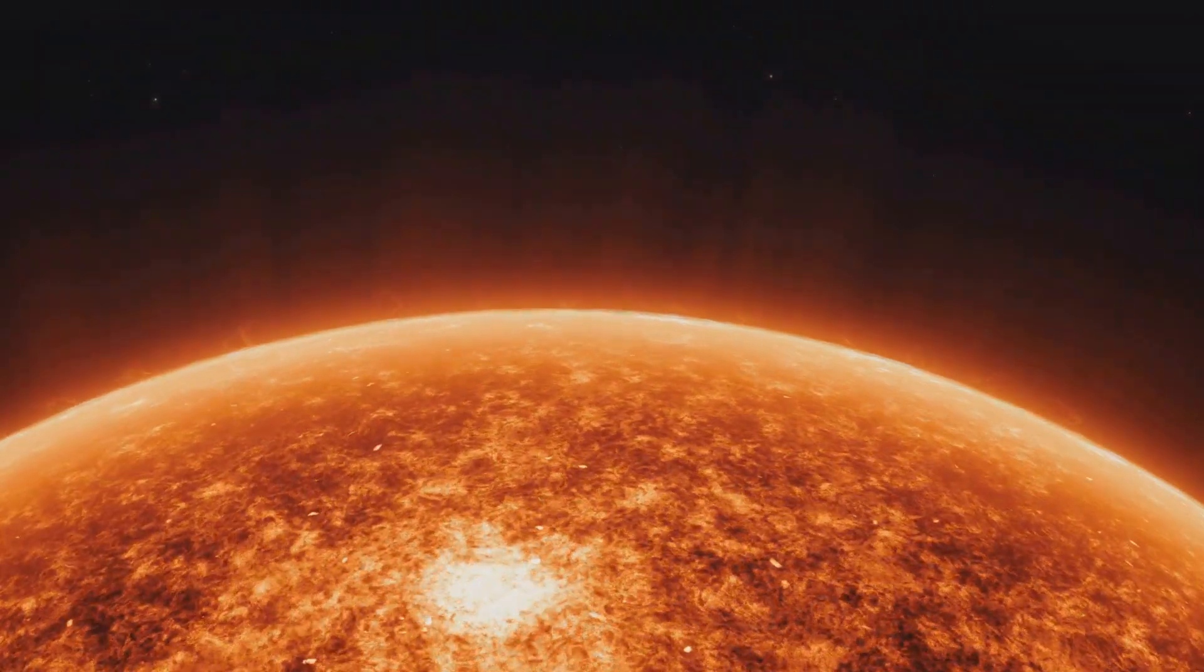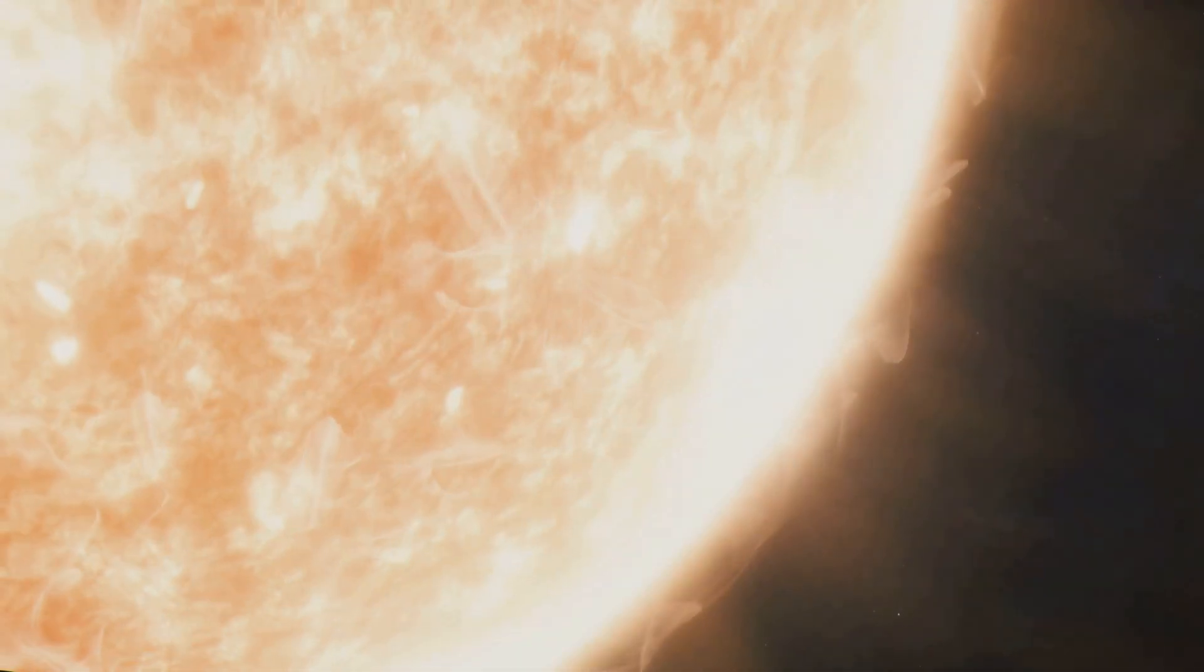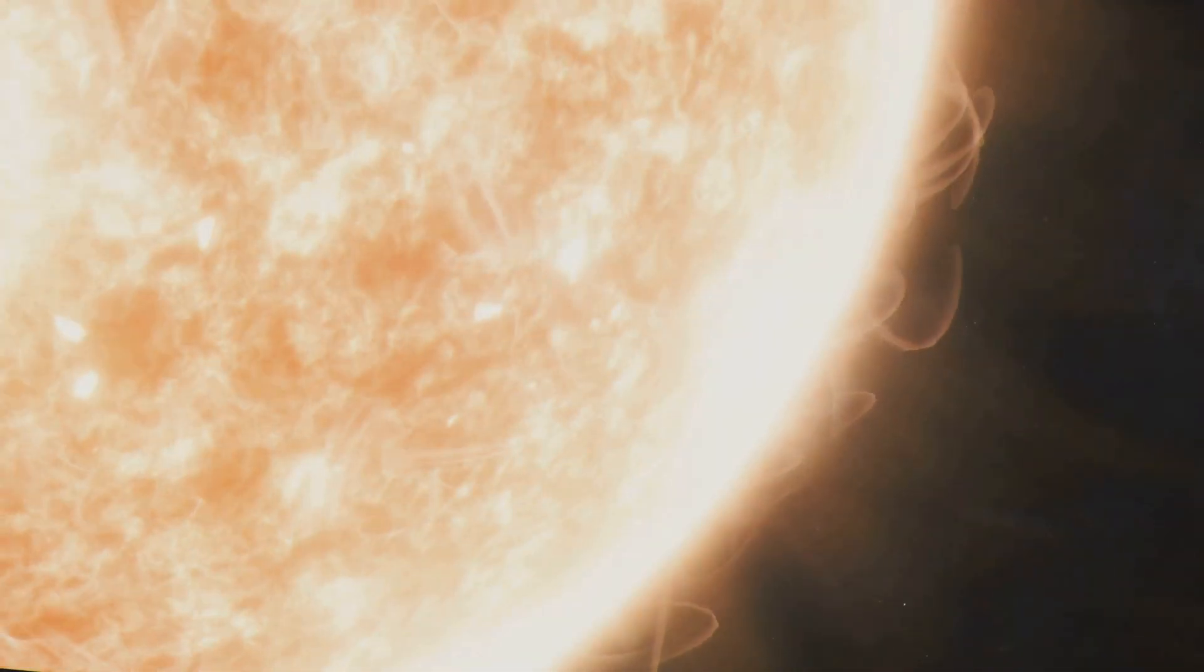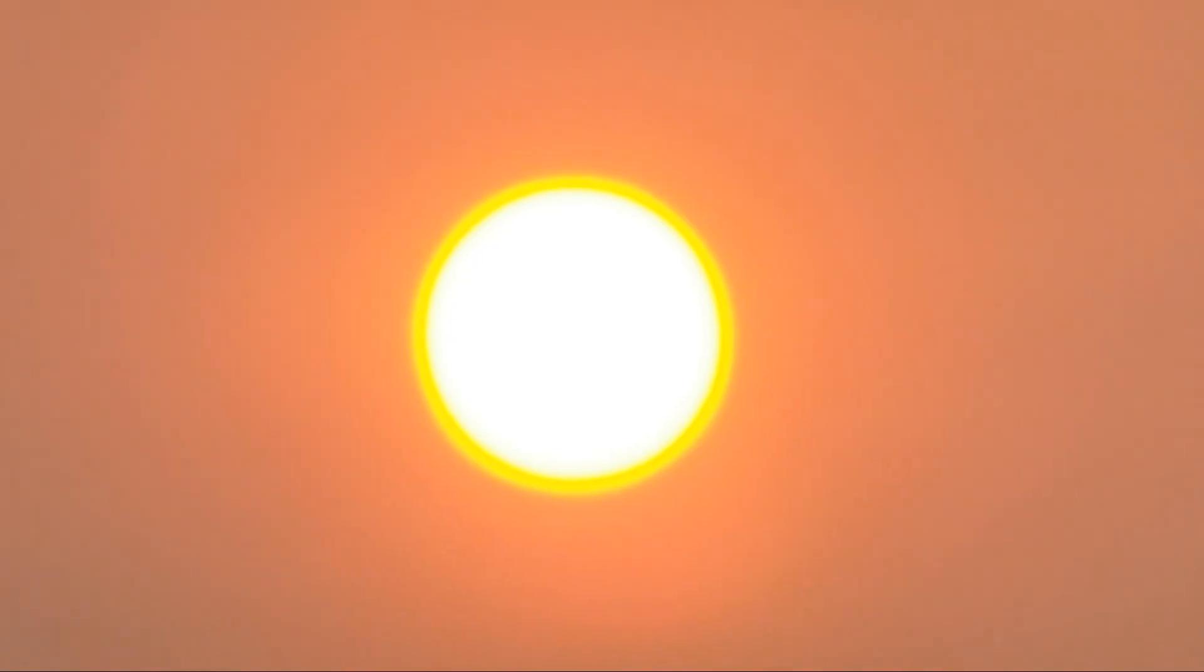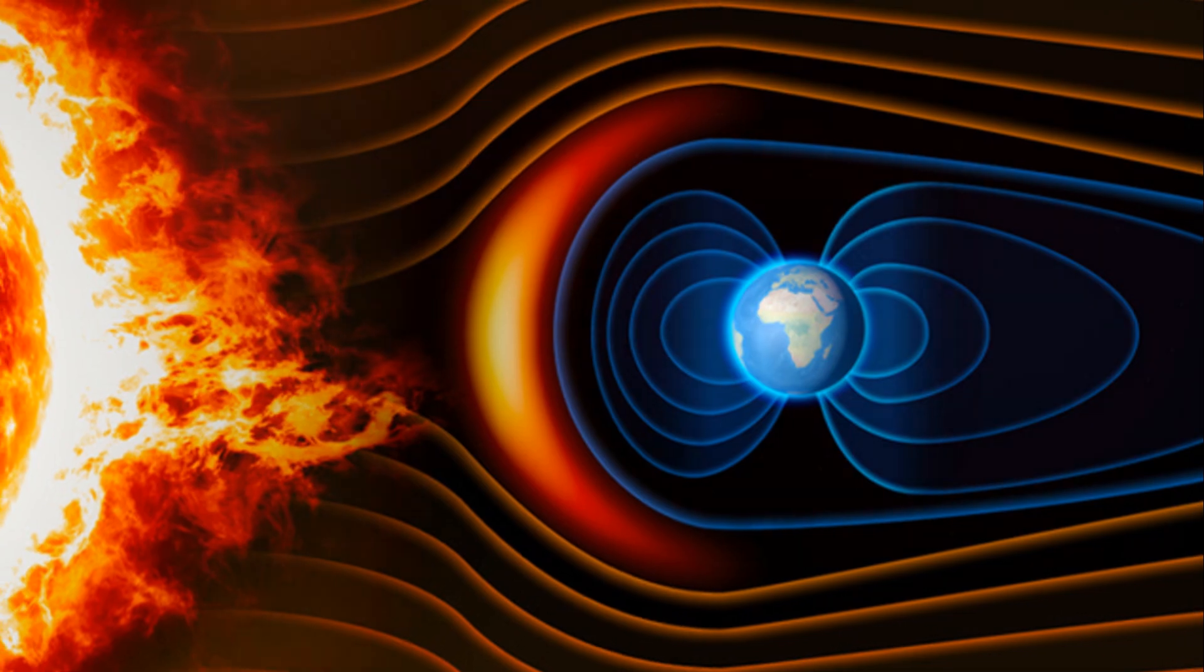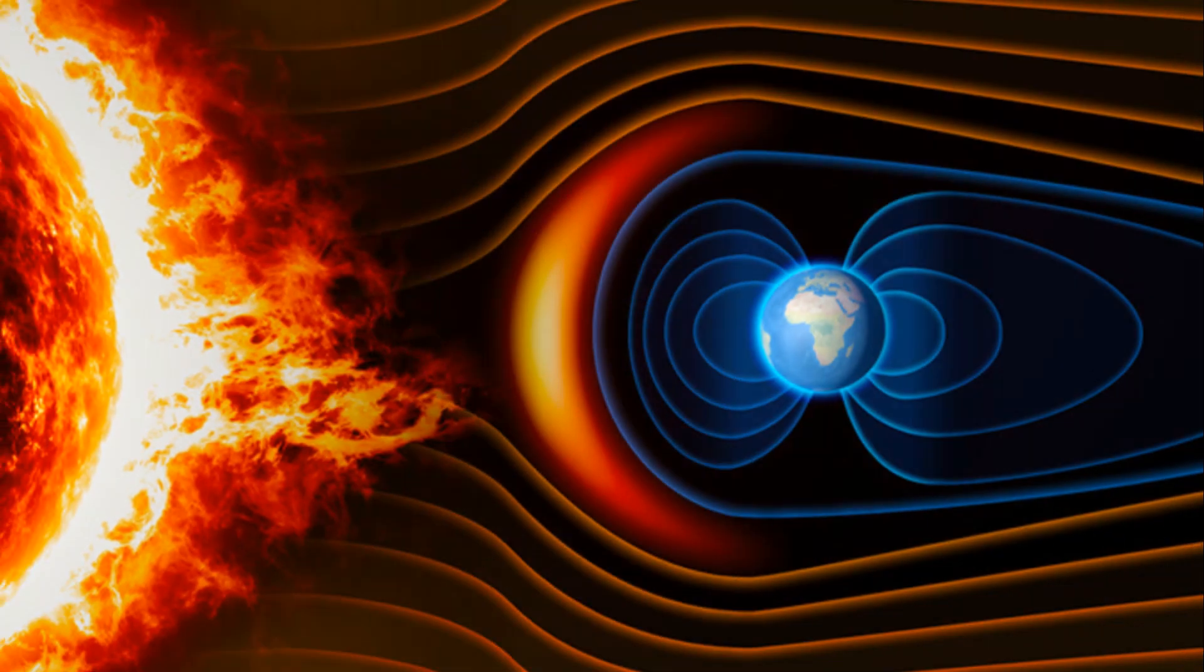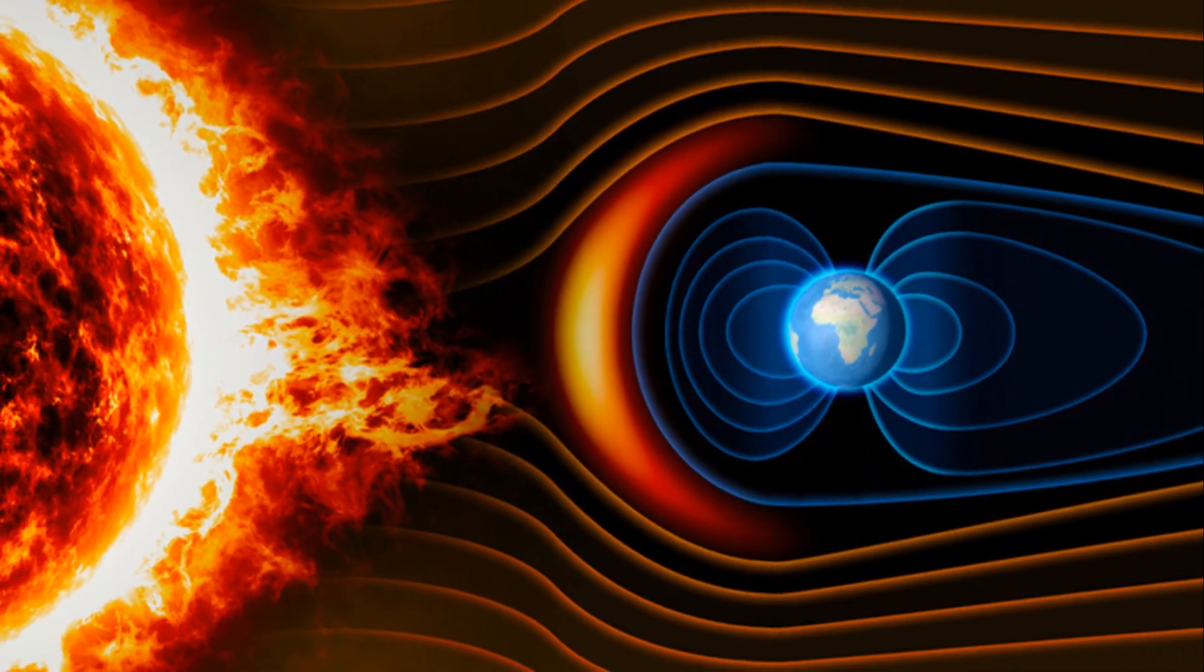Now let's talk specifics. This May, NASA's Solar Dynamics Observatory caught some breathtaking images. We're talking about flares hitting the X5.8 and X1.5 class, which in solar terms is pretty wild. The light these flares emit spans the entire electromagnetic spectrum. It's not just a light show, though.